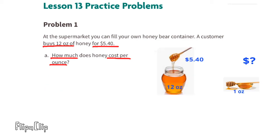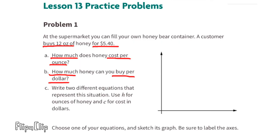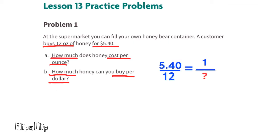12 ounces of honey cost $5.40. One ounce of honey would cost $5.40 divided by 12. 12 ounces divided by 12 equals one ounce, and $5.40 divided by 12 equals $0.45. So one ounce of honey costs $0.45. Part B: how much honey can you buy per dollar?